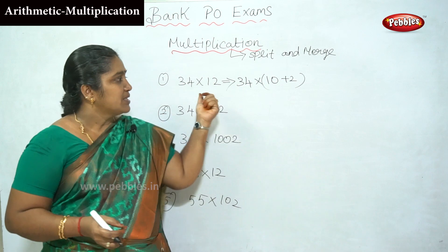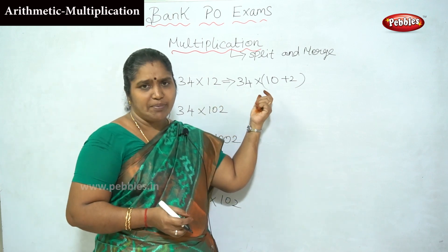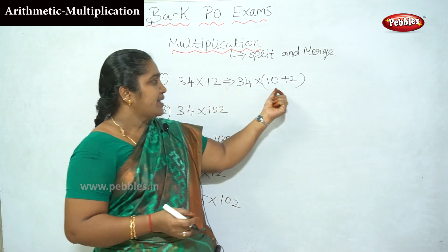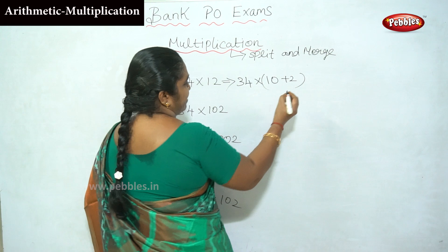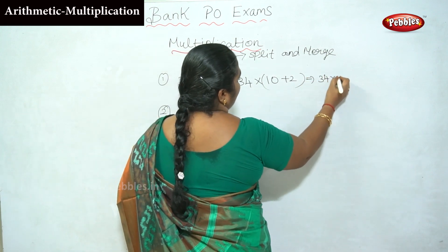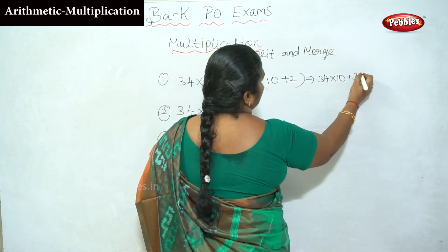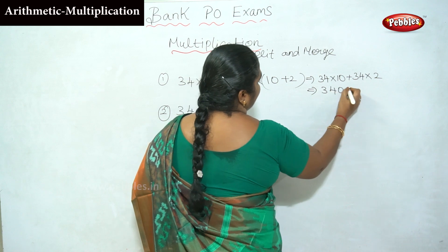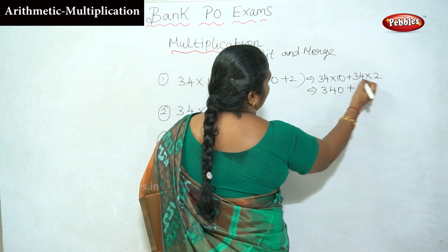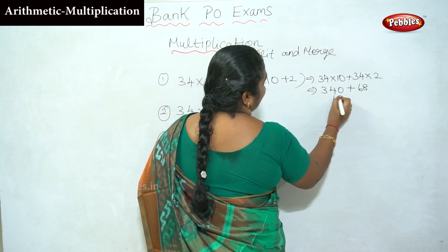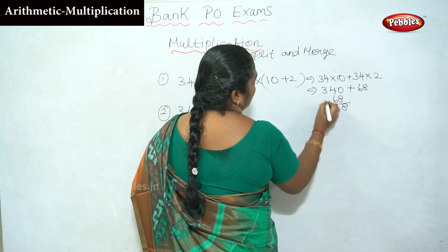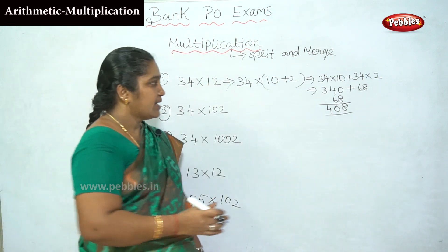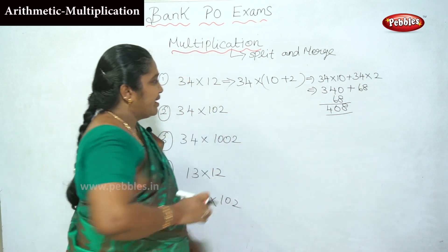This is the simple way. We split 12 into 10 plus 2, which means 34 into 10 plus 34 into 2. So 34 into 10 is 340, plus 34 into 2 is 68. Add them: 340 plus 68 gives us the answer.